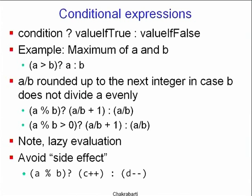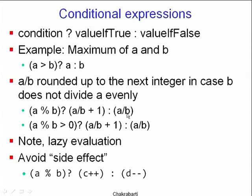The form that abuses C++'s conflation between booleans and ints says 'a % b ? a/b + 1 : a/b', meaning if the remainder is nonzero, return a/b + 1, otherwise return a/b.